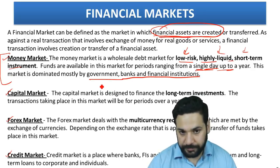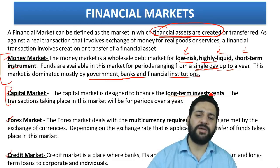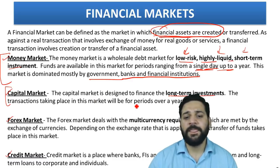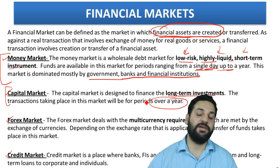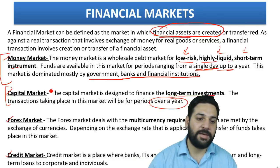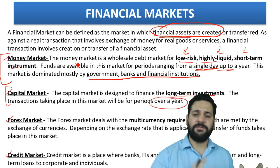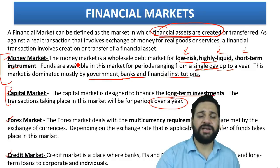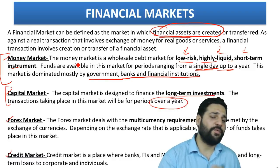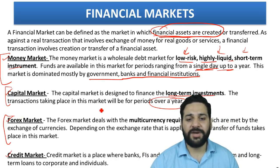The capital market is designed to finance long-term investments — equities and bonds are part of the capital market. The time period is normally more than a year, sometimes five, six, seven, or ten years. The money market serves very short-term needs of banks, governments, and financial institutions — very low risk, highly liquid, and short-term, ranging from one day to up to a year.